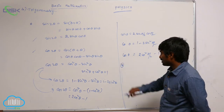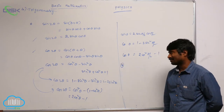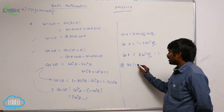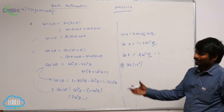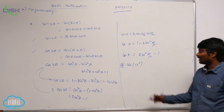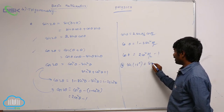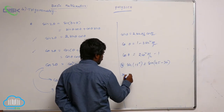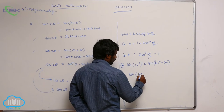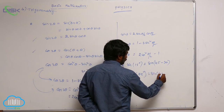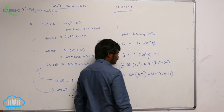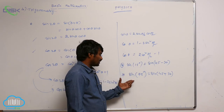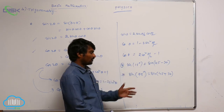Where are we going to use these relations? For example, sin 15° — you can write it as sin(45° − 30°) using the sin(A − B) formula. Similarly, sin 75° = sin(45° + 30°) using the sin(A + B) formula. In the same way, cos 15°, cos 75°, tan 15°, tan 75° can all be derived.